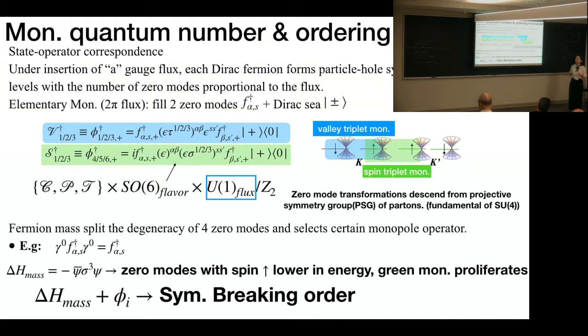This is because the center of the SO(6) and the minus one of this U(1) flux has the same operation on all physical operators. So this has to be modded out. So actually, the mechanism we propose from this U(1) Dirac spin liquid to other symmetry-breaking orders is by the formula: mass plus monopole proliferation.